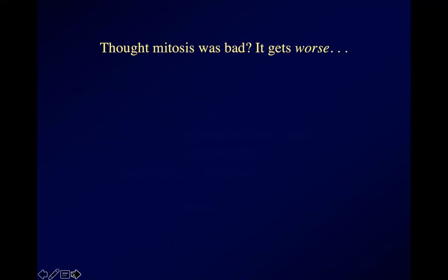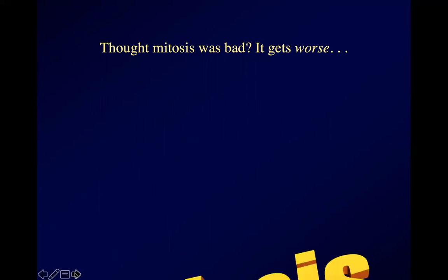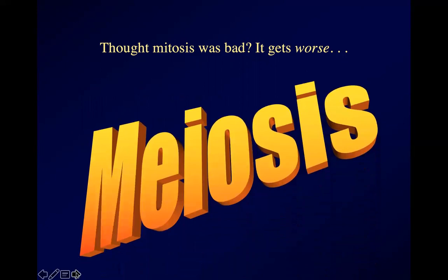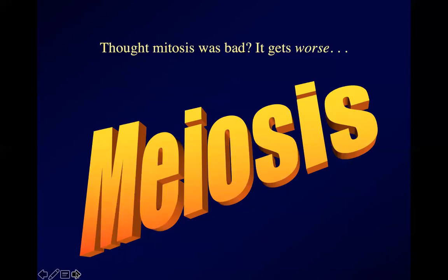So you thought mitosis was bad — it gets considerably worse, because there's a second type of cell division called meiosis. Not mitosis — meiosis. Meiosis is kind of a pain in the neck to learn, but we need to get through it because it's an important part of the scaffolding I'm trying to build here. It's an important piece in the jigsaw puzzle.